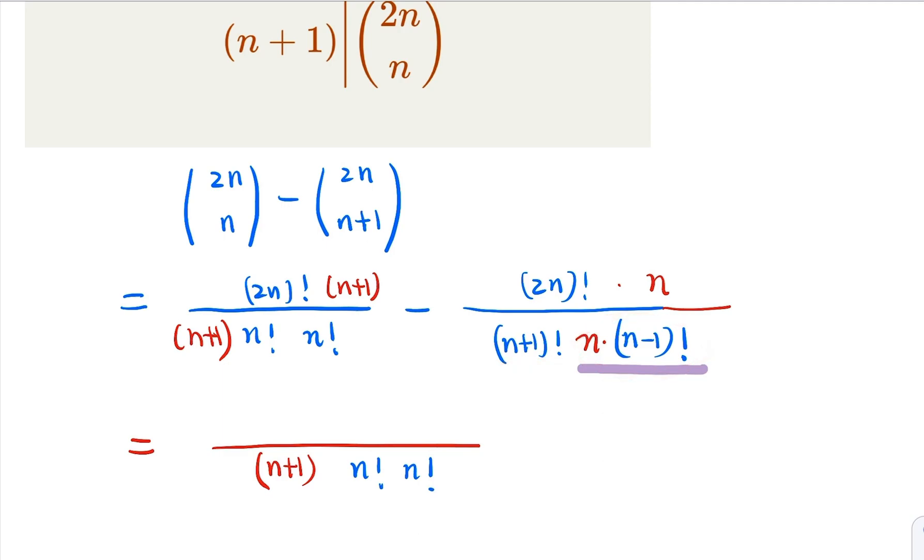Same denominator here. And for the numerator however, you have 2n factorial times n plus 1 minus n, that's 1.